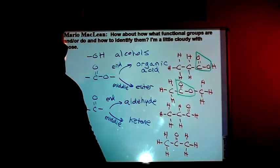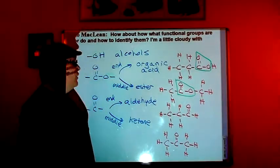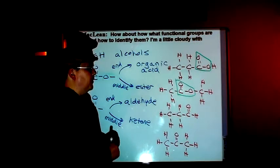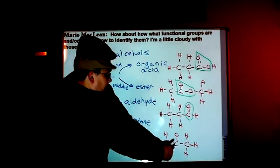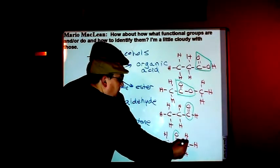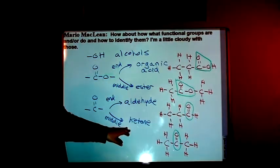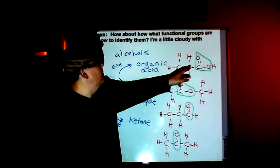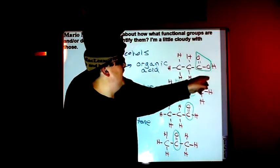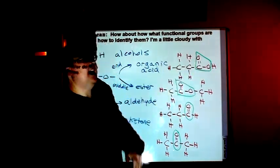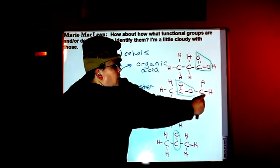These two molecules are also isomers of each other. They each have three carbons, six hydrogens, and one double-bonded oxygen. What's different about them? In this one, the double-bonded oxygen is bonded to an end carbon. In this molecule, the double-bonded oxygen is on a middle carbon. On the end, it's an aldehyde; in the middle, it's a ketone. This molecule is called propanoic acid — prop, because there are three carbons, and anoic acid because they're single bonds.